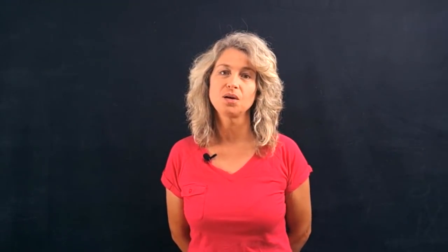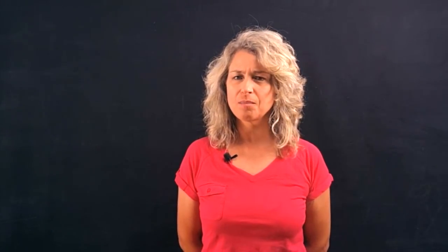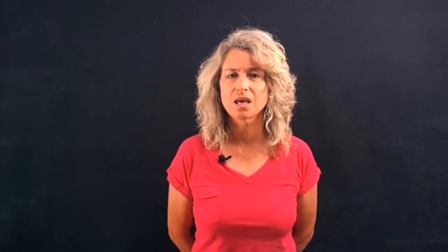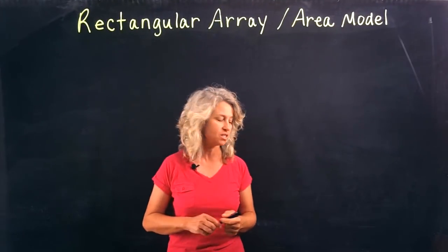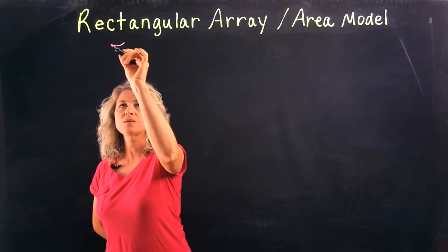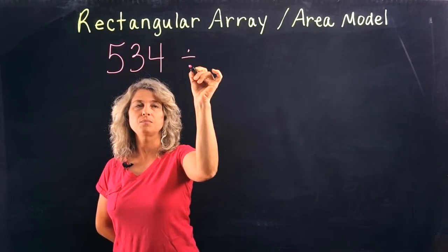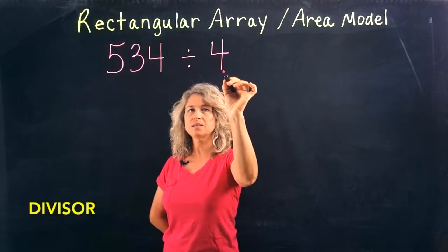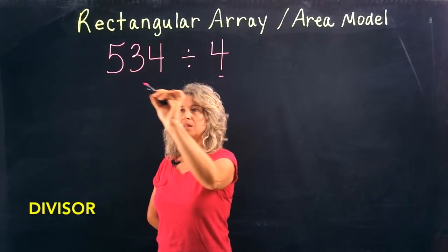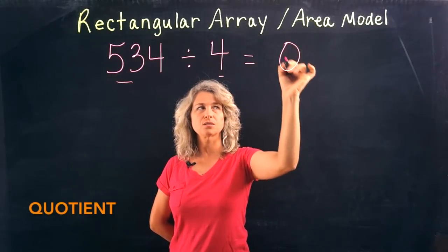Hello! Today I want to teach you how to do long division using an area model. Be patient with yourself because this can be a difficult skill, but once you get the hang of it you're going to love it. Let's start with a problem: 534 divided by 4. Notice that 4 is the divisor, 534 is your dividend, and we're looking for a quotient.